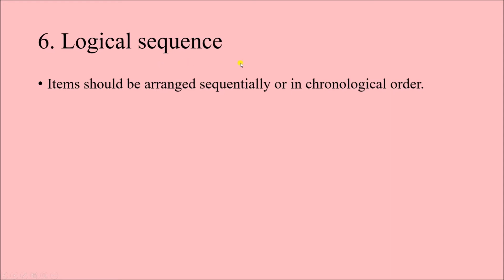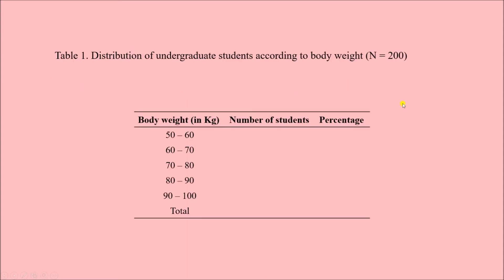Next, logical sequence should be followed — items should be arranged sequentially or in chronological order. As you can see, the body weight ranges measured in kilograms are: 50 to 60, 60 to 70, 70 to 80, 80 to 90, and 90 to 100 kg. We could have written them haphazardly, but instead we have arranged them in ascending order — that is, in increasing order — and that is why we can say a logical sequence has been maintained.